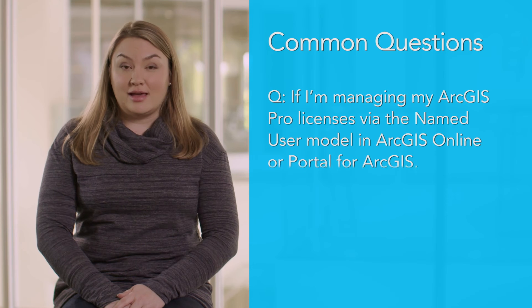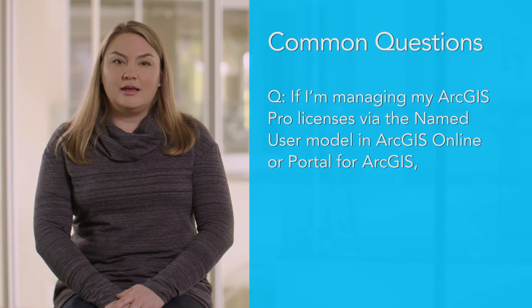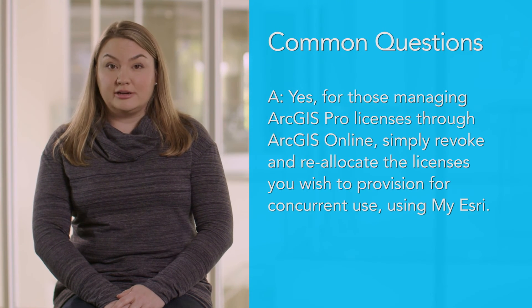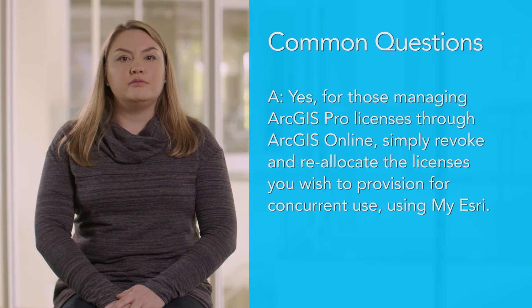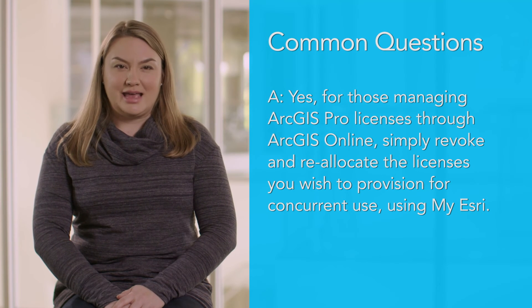Activating ArcGIS Pro may be new to you. Here are some answers to common questions about how to authorize and use ArcGIS Pro. If you're managing your ArcGIS Pro licenses via the named user model in ArcGIS Online or Portal for ArcGIS and want to switch to concurrent use licenses — yes, you can. For those managing licenses through ArcGIS Online, simply revoke and reallocate the licenses you wish to provision for concurrent use using MyEsri. For those managing through Portal for ArcGIS, please contact your customer service representative for further assistance, as additional steps are needed.